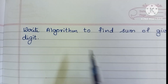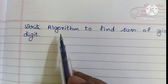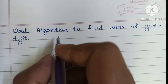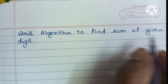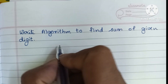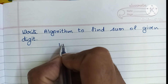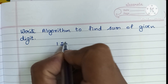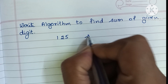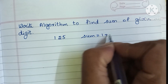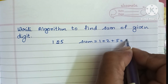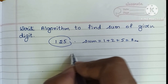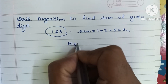In this video we are going to learn how to write an algorithm to find the sum of given digits. For example, if our given number is 125, the sum of digits is 1 plus 2 plus 5, which equals 8.